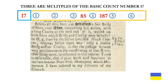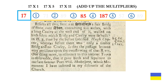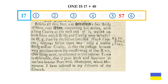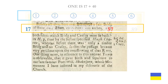Three are multiples of the basic count number 17. And in a bizarre revelation, I noticed that when we add up the multipliers — 17×1, 17×5, 17×11 — we get the number 17. Two are the digit sum number 18. One is the mirror number of 17. And one is 17 plus 40.